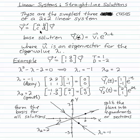y prime equals coefficient matrix A times y. The base solution is eigenvector e to the eigenvalue t, where v1 is an eigenvector for the eigenvalue of lambda 1.